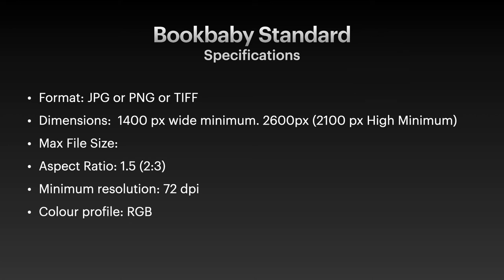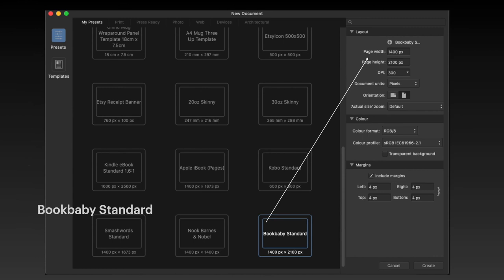For the BookBaby standard: JPEG, PNG, or TIFF. Dimensions minimum 1400 wide and 2100 high — so make it 2600, which will match up with an aspect ratio of 1.5 or 2 to 3. Minimum resolution 72 DPI. That's what it looks like in the preset.